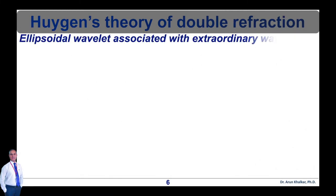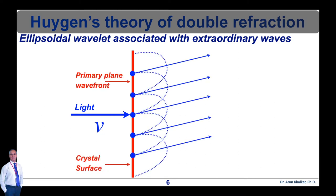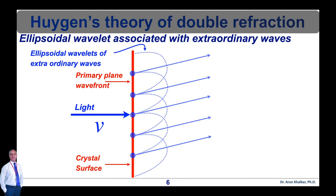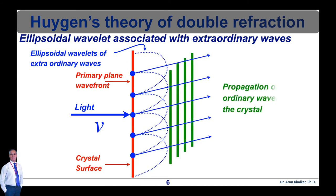Now let's see the ellipsoidal wavelet associated with extraordinary waves. As shown in this diagram, when ordinary light is incident on a crystal surface, the wave fronts corresponding to the extraordinary ray are ellipsoidal. The extraordinary waves have different velocities in different directions, so the corresponding wave front is elliptical, as shown in this diagram.